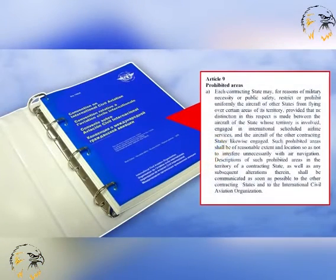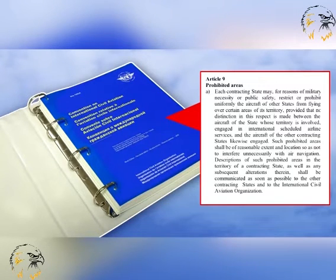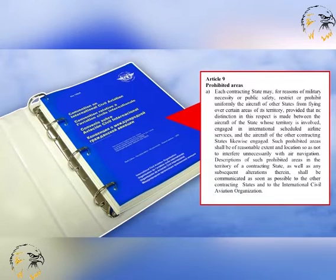Under Article 9 of the Convention on Civil Aviation, each contracting State has the right, for reasons of military necessity or public safety, to prohibit the aircraft of other States from flying over certain areas of its territory, and to establish procedures for the interception of aircraft flying over that territory.